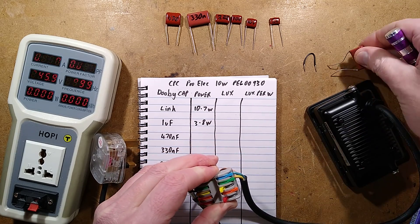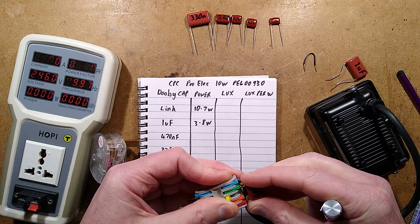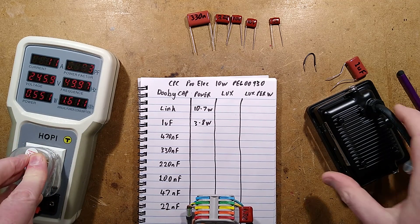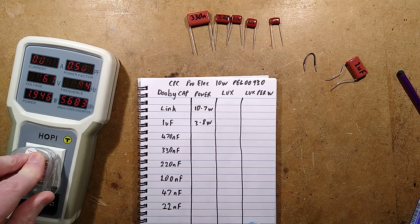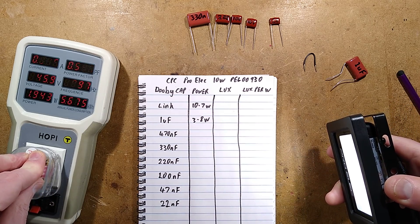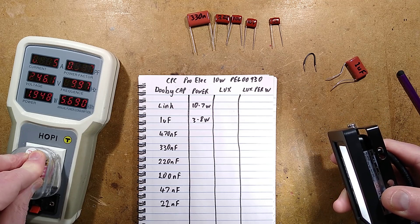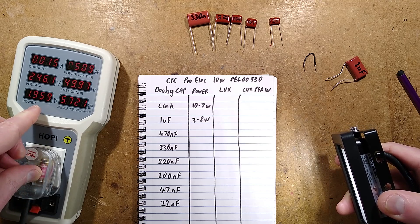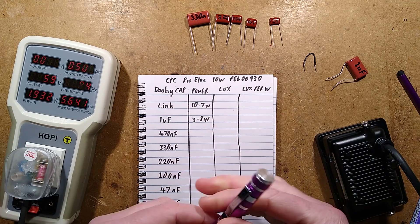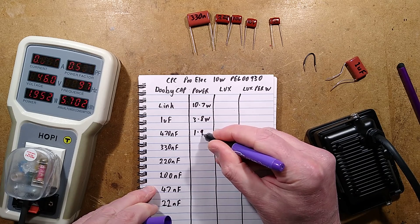Let's try the 470 nanofarad now. So I'll plug it in. The power it's showing is... It's still pretty bright, actually. It's still casting a good amount of light. It's now down to 1.95... Yeah, let's make it 1.9 watts, I'll put that down as. 1.9 watts.